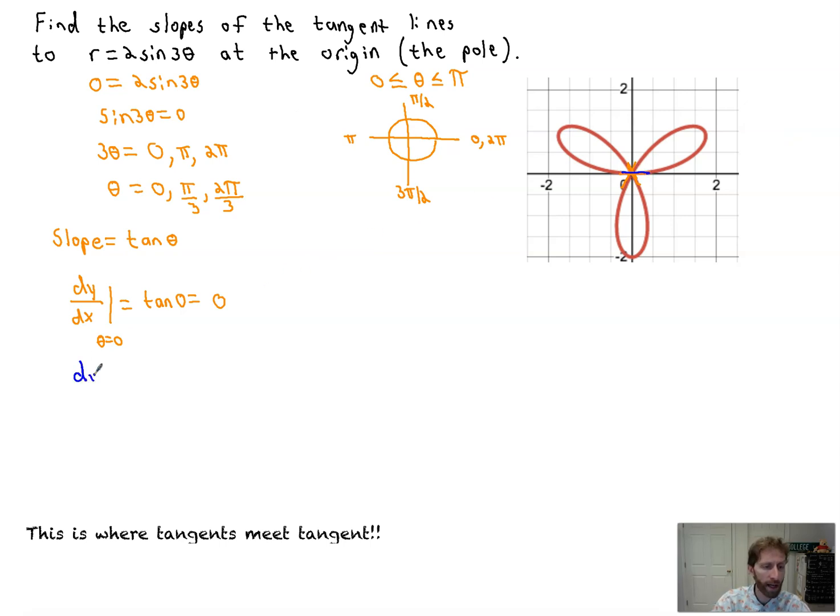Then we're going to do dy/dx at θ is equal to π/3. That's the next one, which is equal to the tangent of π/3. And the tangent of π/3 is root three over two, that's sine of π/3, all over one half. So that's all over one half, and that simplifies down to the square root of three. Which makes sense because here we are at π/3 right there. So that's going to be the positive slope.